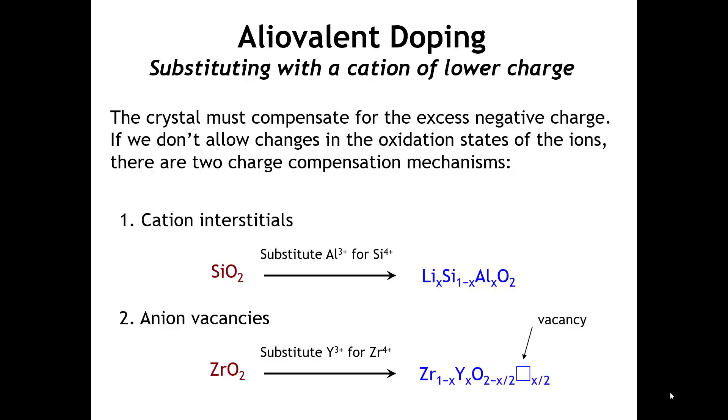The other way to compensate for not having enough positive charge is to introduce vacancies on the anion site. When we substitute yttrium 3-plus for zirconium 4-plus, we don't have enough positive charge, and the compensating defect is a vacancy on the oxygen site. This substitution is very important from a technology point of view. Compositions of this type are called yttrium-stabilized zirconia, and they are among the best oxygen ion conductors at high temperature with many applications.